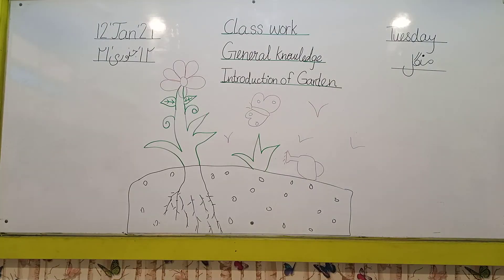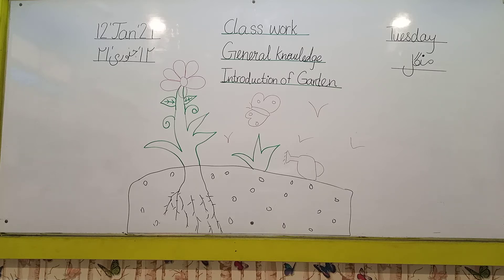Who is telling me the spelling of garden? The spelling of garden is G-A-R-D-E-N. Garden — G-A-R-D-E-N.